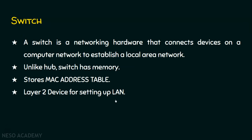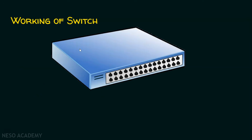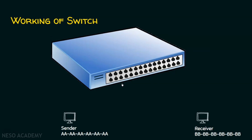We will see the working of a switch now. Visualize this hardware device — the switch — which has some number of ports. We can connect multiple computers to each of these ports. Let's assume there is a sender computer and a receiver computer. Every computer has an IP address and a MAC address. For illustration, I have taken only MAC address. The sender computer has MAC address all A's, and the receiver computer has MAC address all B's. These computers are connected to the switch at different interfaces or ports.